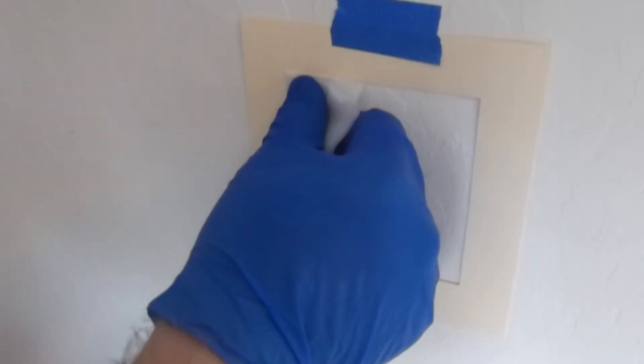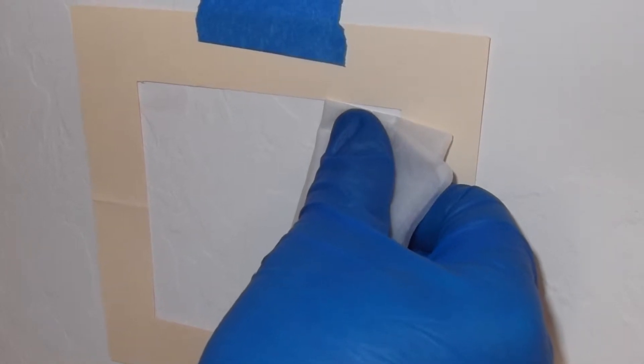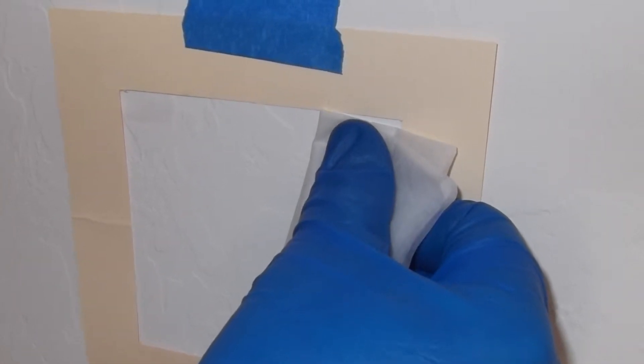Using firm pressure, wipe the area within the template with at least five overlapping side-to-side horizontal passes. If blotting, be sure to blot at least five times on each horizontal pass.